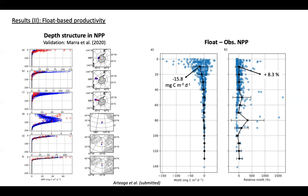Right now, with the early steps of these float-based primary production estimates, what we are trying to do is capture some of the large spatial patterns in primary productivity and the seasonal differences in primary production in the global ocean.